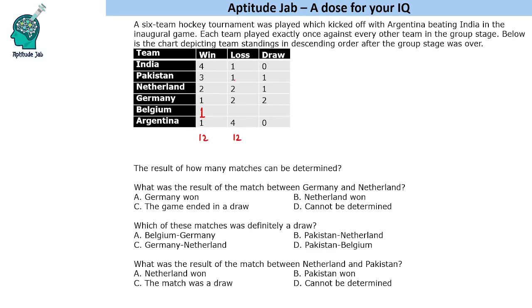Adding up the wins: two, six, ten, and twelve — Belgium is also identical to Germany, so they may have been separated by goal difference. We don't need to worry about that. Now we have to answer: the result of how many matches can be determined — meaning for how many matches can we find out who is the winner and who is the loser?